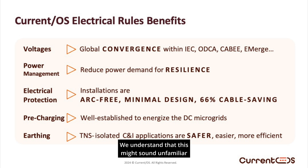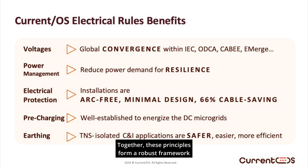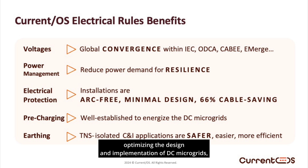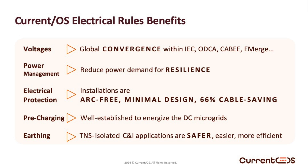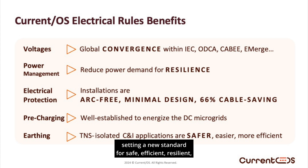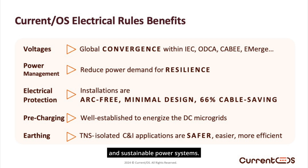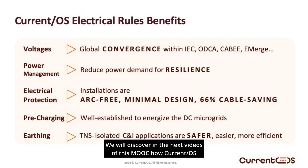We understand that this might sound unfamiliar to our American audience and appreciate your understanding. Together, these principles form a robust framework published in the Current OS System Reference Document, optimizing the design and implementation of DC microgrids, and setting a new standard for safe, efficient, resilient, and sustainable power systems. We will discover in the next videos of this MOOC how Current OS electrical rules were defined and how they operate.